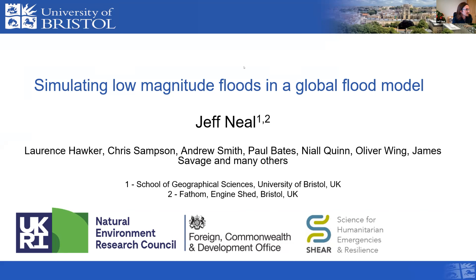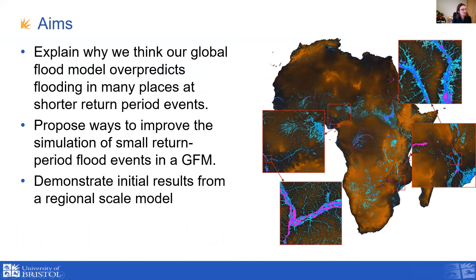First, I'm going to explain why we think our global flood model overpredicts smaller return periods, and the evidence we have behind that. Then I'll talk about some of the ways we're looking to improve our simulation of small return periods and the changes we're making to our modeling setup. And then I'll show some initial results demonstrating this working in the model at regional scale.